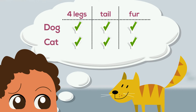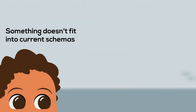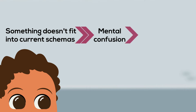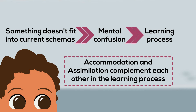Once this is done, the child returns to a state of mental clarity. Therefore, when a child encounters something that doesn't fit into their current schemas, their mental confusion can drive their learning process. This means that accommodation and assimilation complement each other in the learning process and play a vital role in each stage of cognitive development.